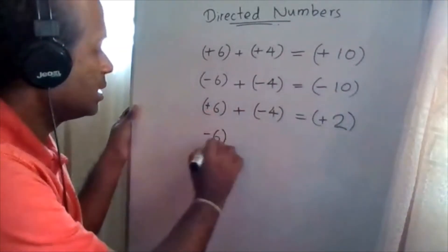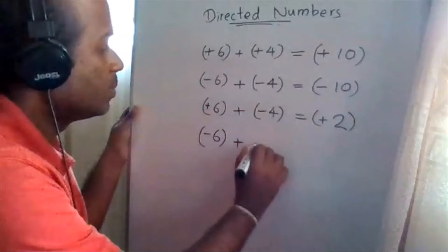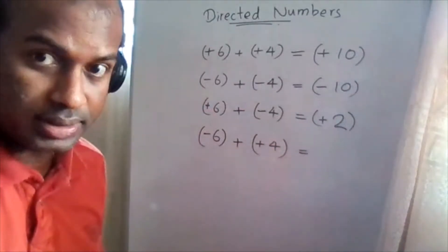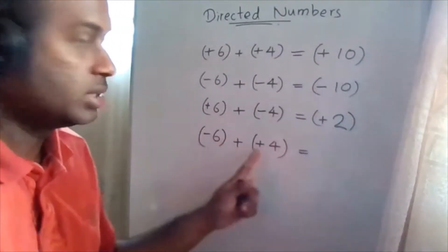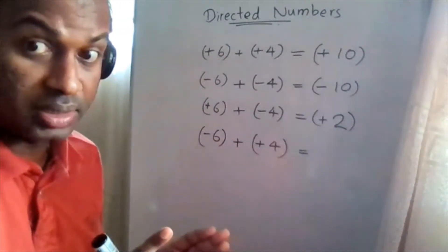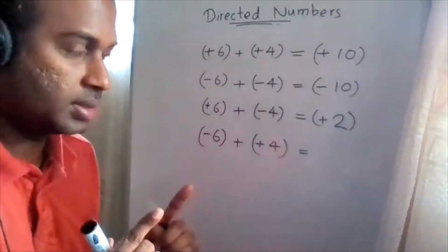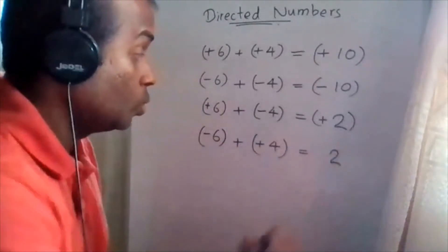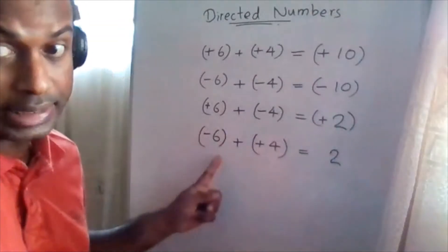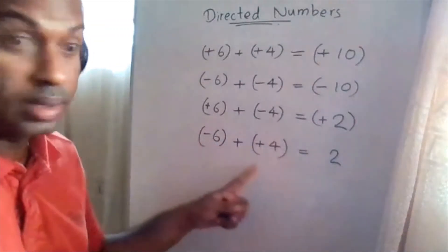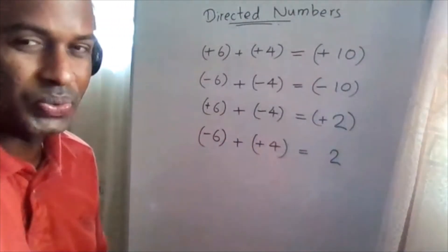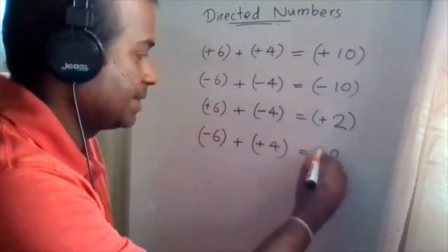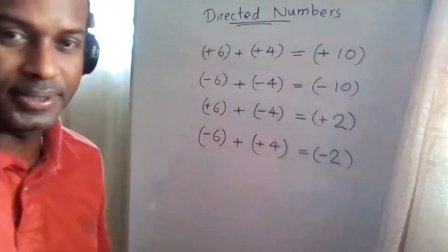Suppose this one negative 6 addition positive 4. Then you have to take the difference. This is negative, this is positive. They are in different signs. Then you have to take the difference. 6, 4. The difference is again 2. But in this case negatives are greater than positive. So the answer should be negative.